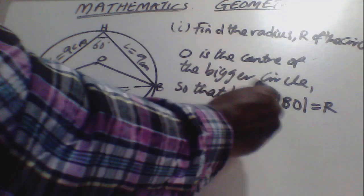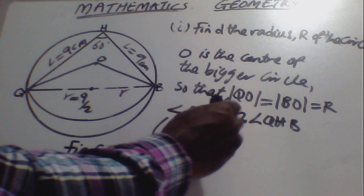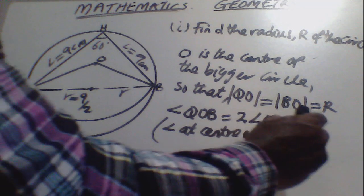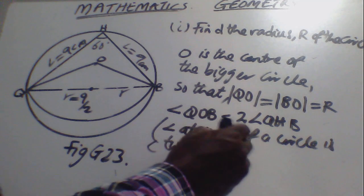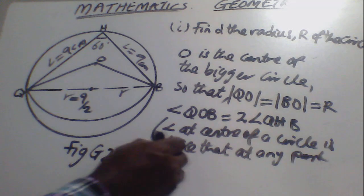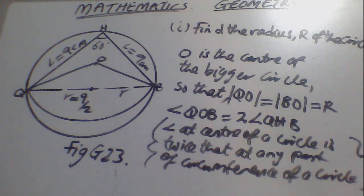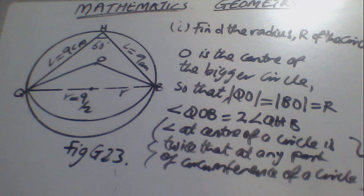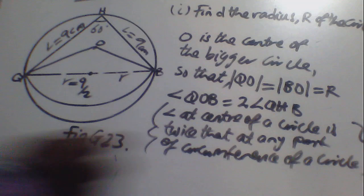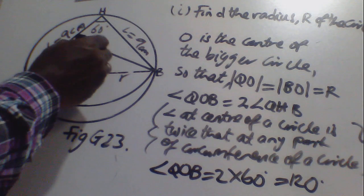By the inscribed angle theorem, the angle at the center is twice the angle at any point on the circumference. So angle QOB equals 2 times angle QHB equals 2 × 60° equals 120°.